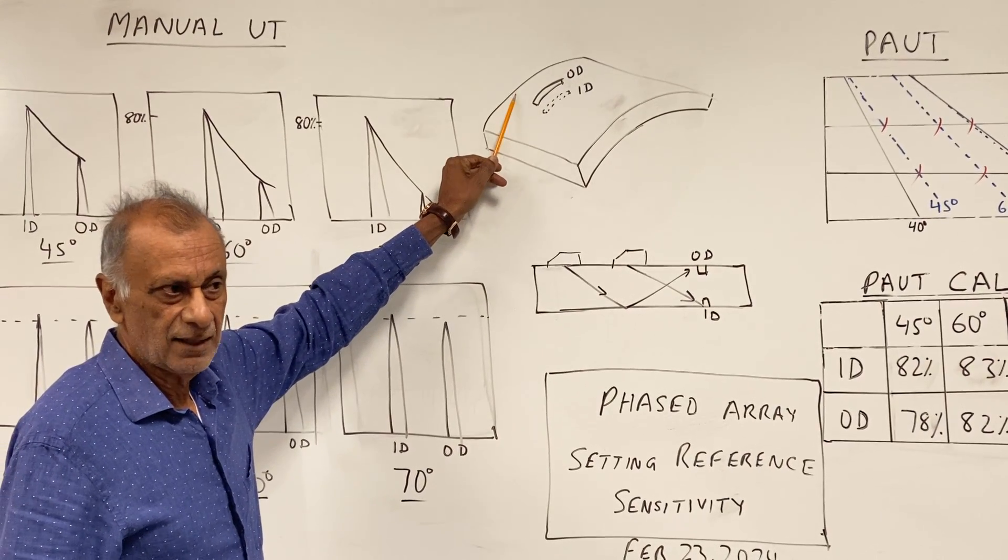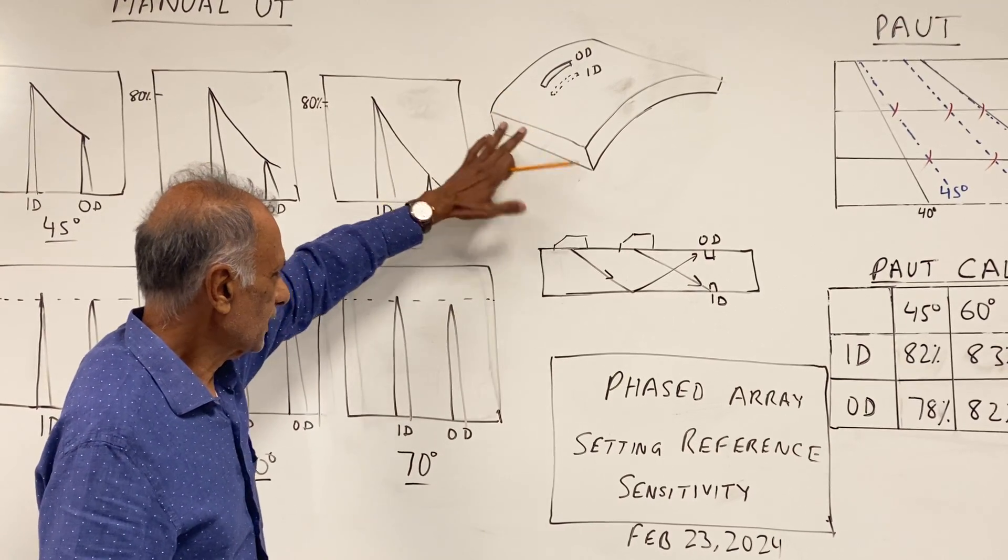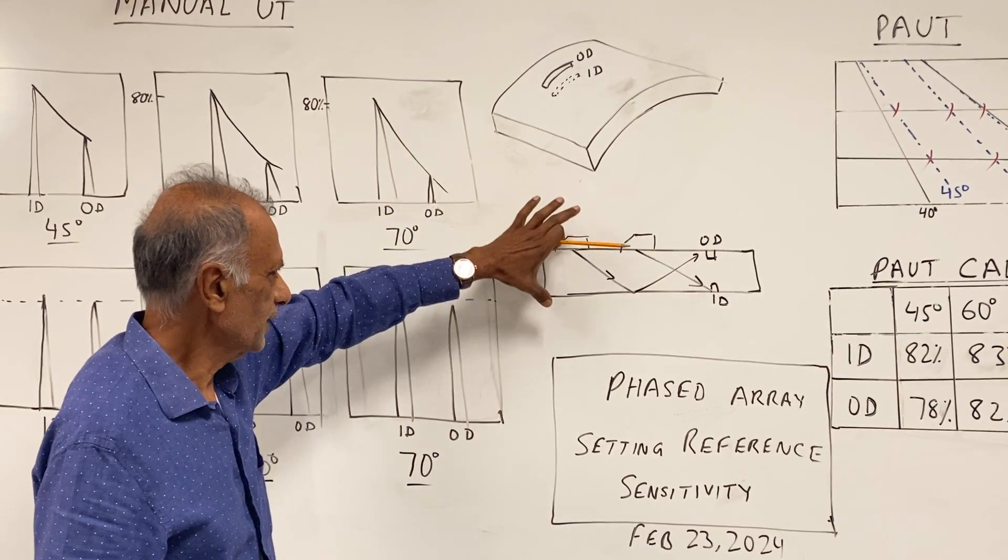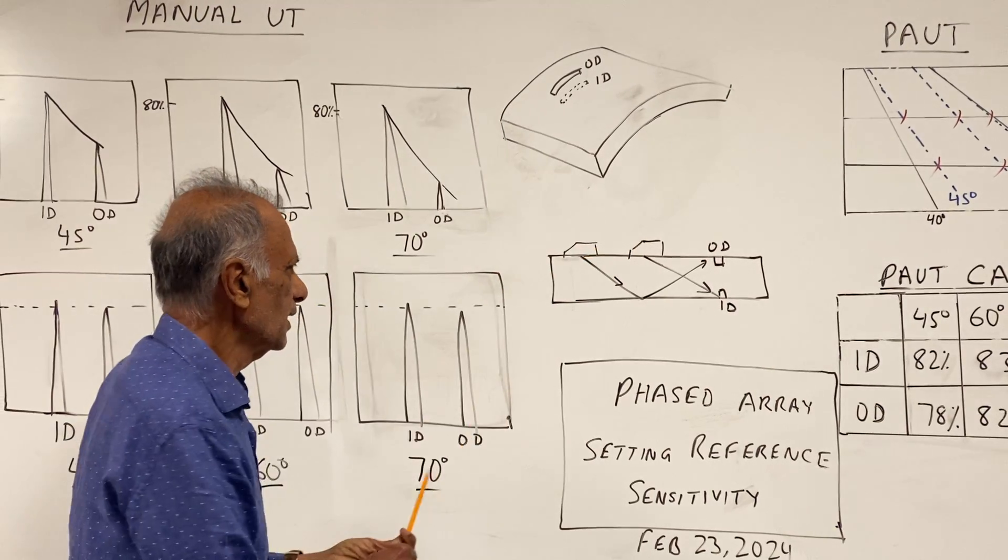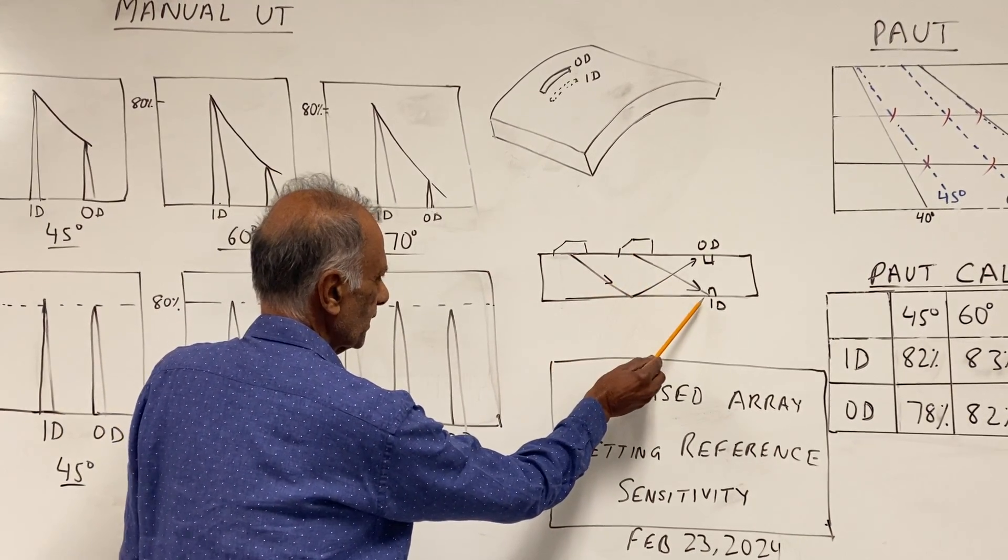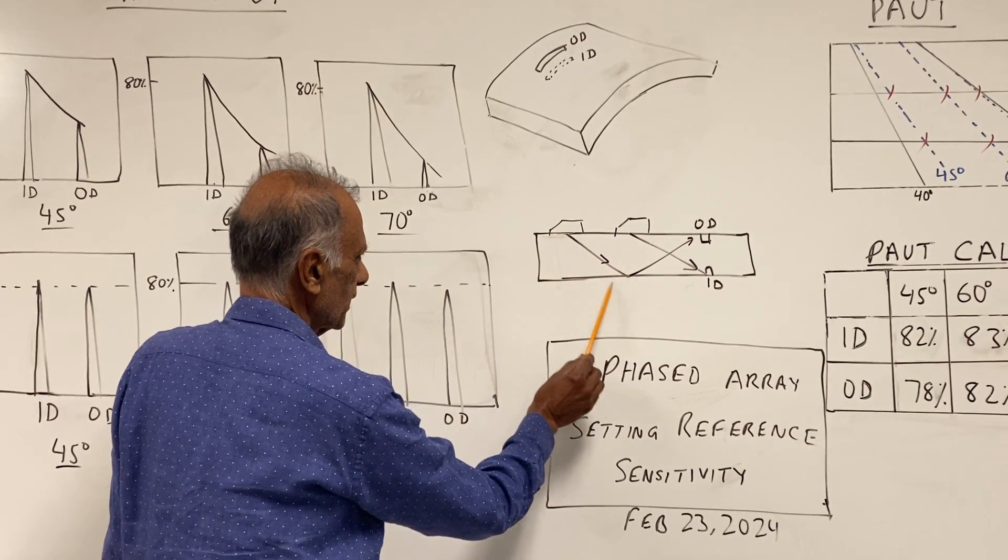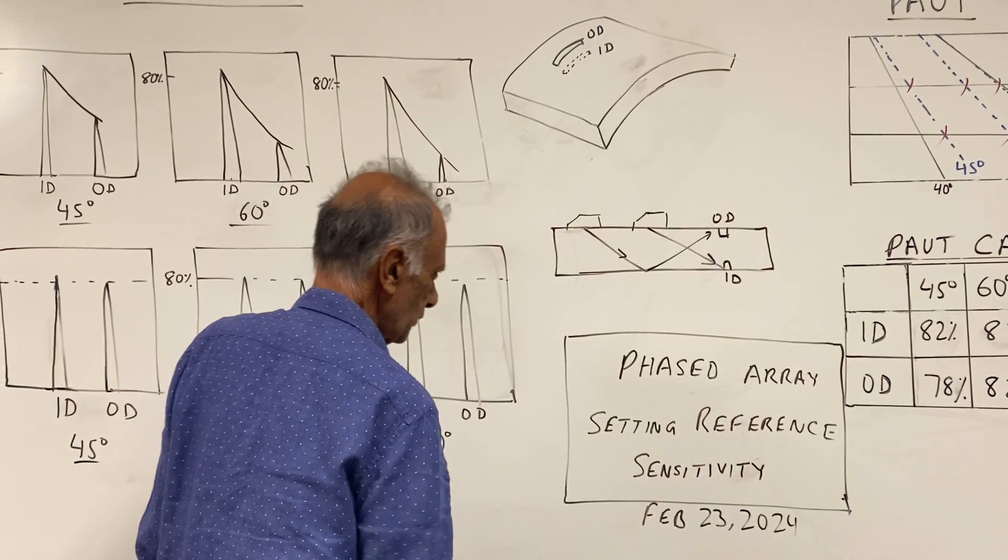These are actually 10% OD and 10% ID notch. So this is our calibration block and this is how we do the calibration. We have the probe sitting here and then we get the signal from the ID notch, then we move the probe back and we get the signal from the OD notch.